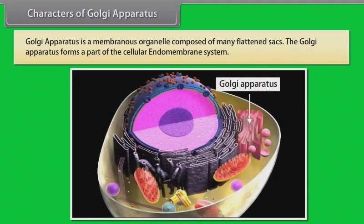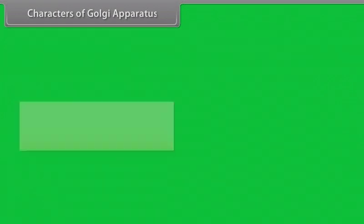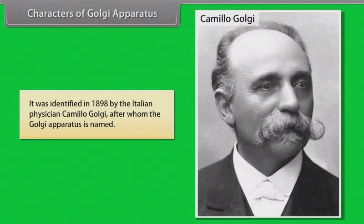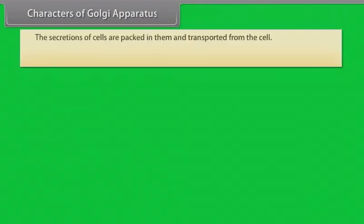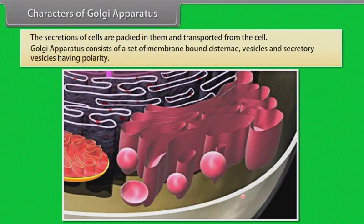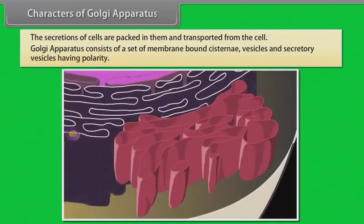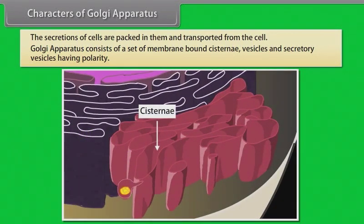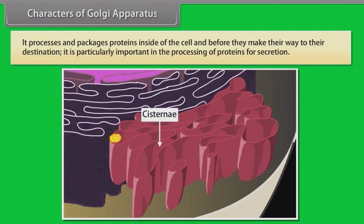Golgi apparatus is a membranous organelle composed of many flattened sacs. It forms a part of the cellular endomembrane system. It was identified in 1898 by the Italian physician Camillo Golgi, after whom it is named. The secretions of cells are packed in them and transported from the cell. Golgi apparatus consists of a set of membrane-bound cisternae, vesicles and secretory vesicles having polarity. It processes and packages proteins inside the cell, and is particularly important in the processing of proteins for secretion.